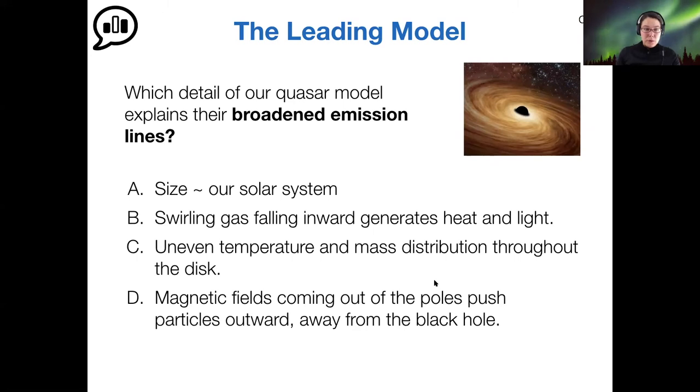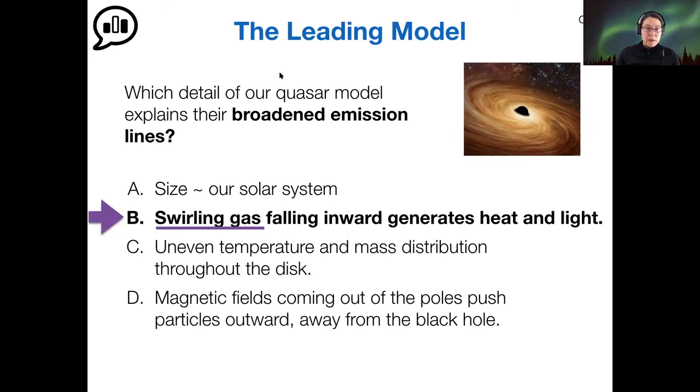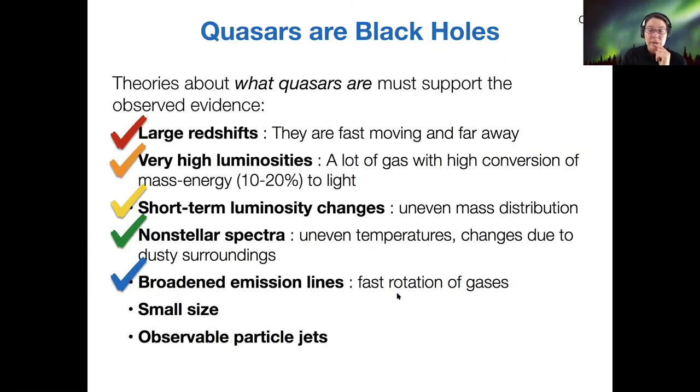I see most votes for B here. And B is definitely part of it. The idea that there's rotation in this system is the reason we see broad emission lines. That's what I just talked about with regards to the activity. But also remembering back to the Tully-Fisher relation, how we measure the mass of a spiral galaxy, that also comes from observing broadened emission lines. So it's the rotation that leads to line broadening here.